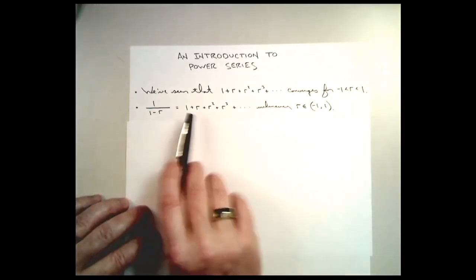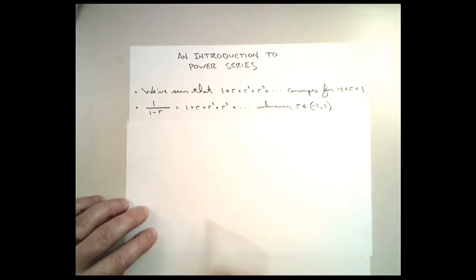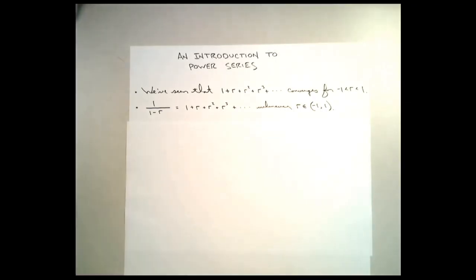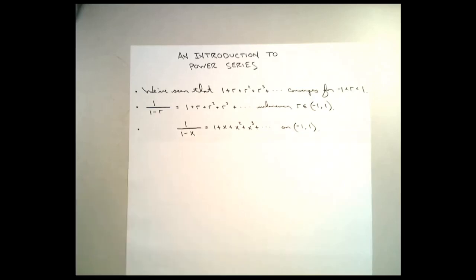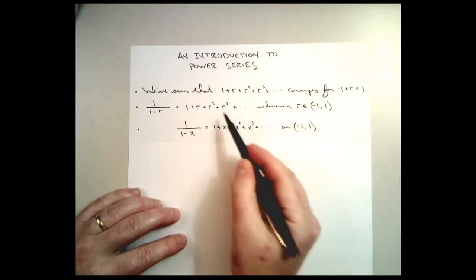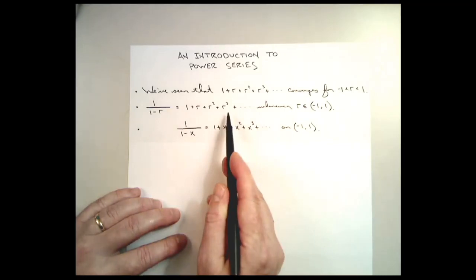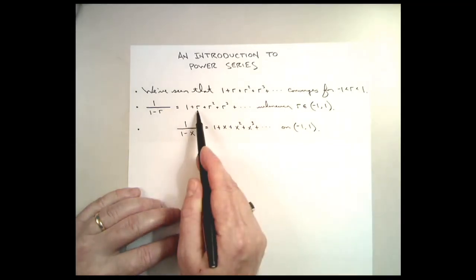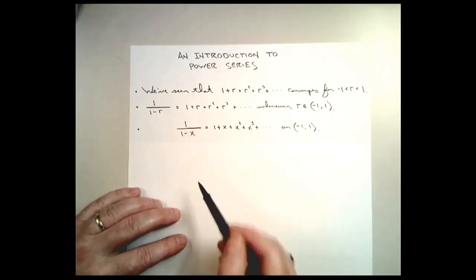Let's look at what happens visually by simply changing the symbol r to another symbol. In particular, what happens whenever I call that symbol x instead of r? Well, on the surface, nothing changes — it's just a variable. If this series was equal to 1 over 1 minus r whenever I used r as my variable, the same series is going to equal 1 over 1 minus x whenever I use x as my variable.